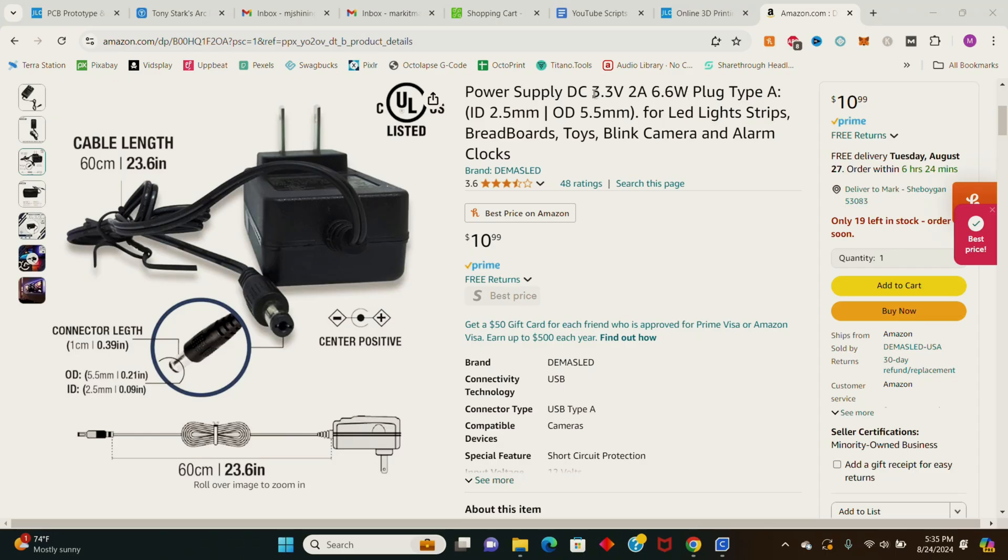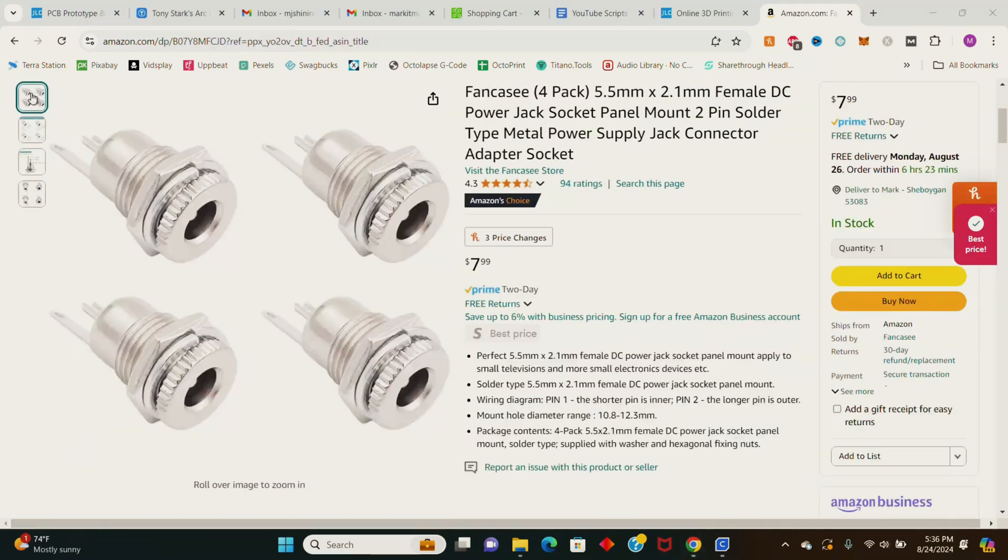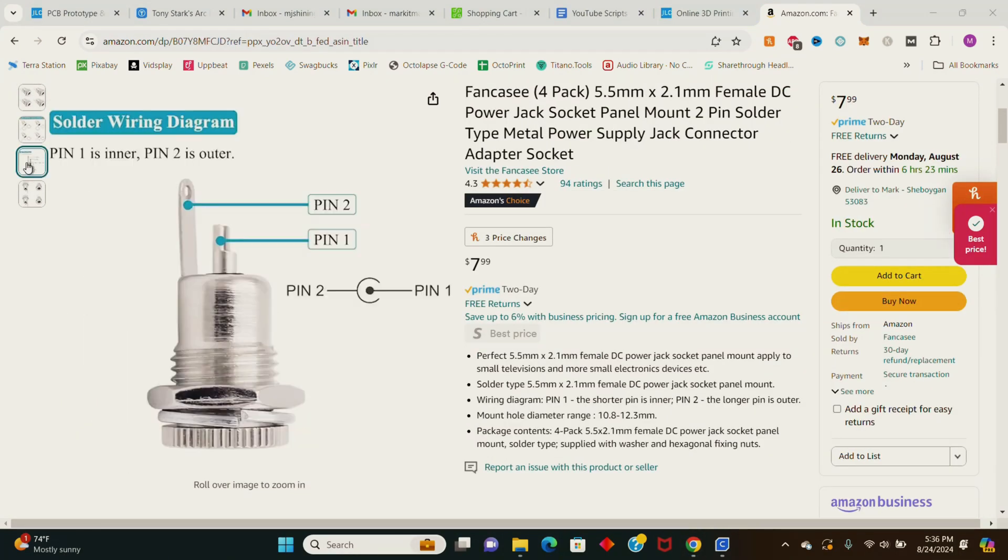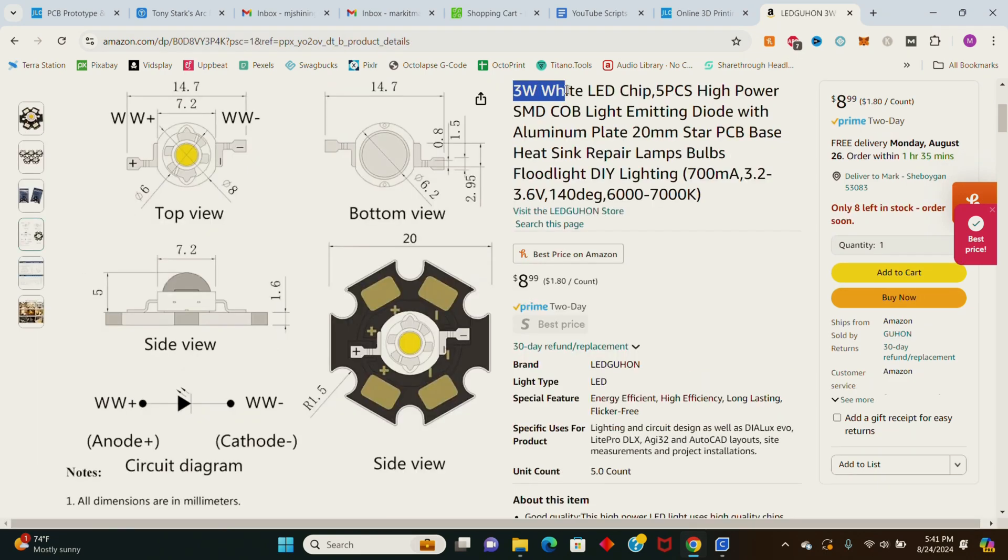The electronics for this arc reactor are extremely easy and pretty much anyone can do it if you have a soldering iron and basic soldering skills. For the power source I purchased this 3.3 volt power supply off Amazon with a standard 5.5 by 2.1 millimeter jack connection. I got matching female sockets to accept the male fittings from the power supply. I also got some white 5 millimeter LEDs and star PCB LEDs. I'll have a link to all the items I purchased in the description below.